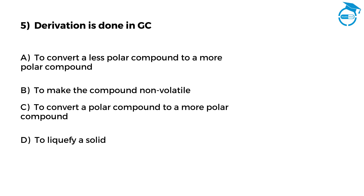Here is the next question — let us see if you know the answer. Derivation is done in GC. Option A, to convert a less polar compound to a more polar compound. Option B, to make the compound non-volatile. Option C, to convert a polar compound to a more polar compound. Option D, to liquefy a solid. Your time starts now.